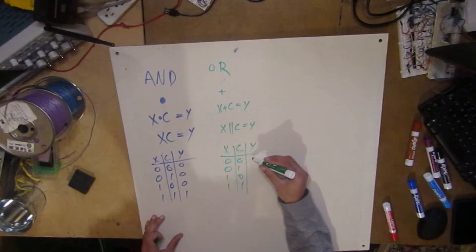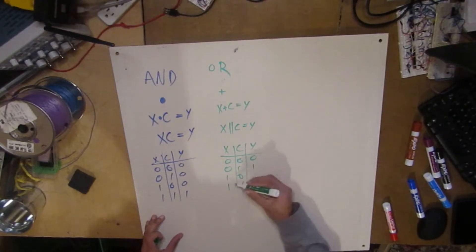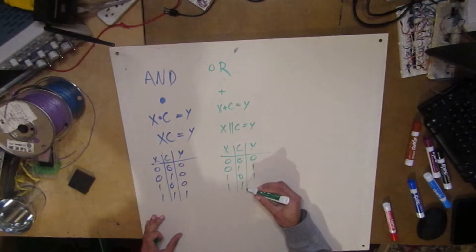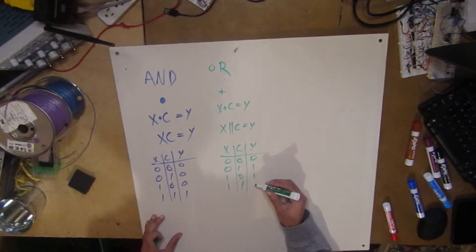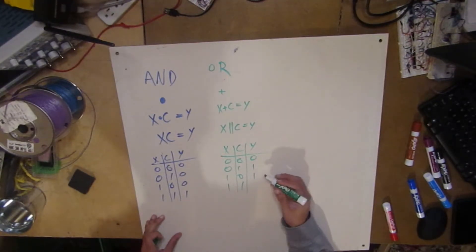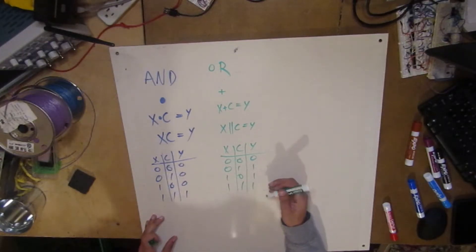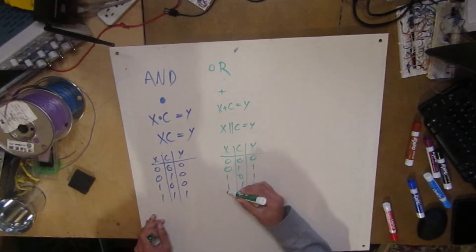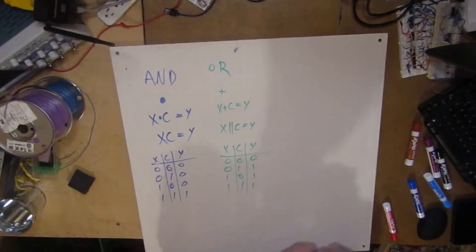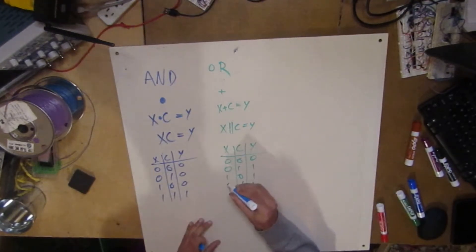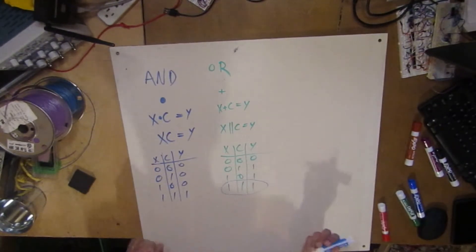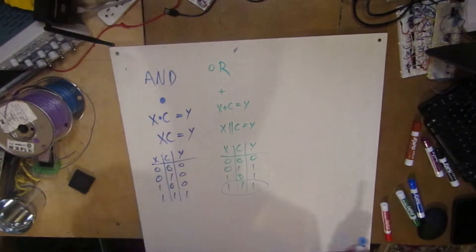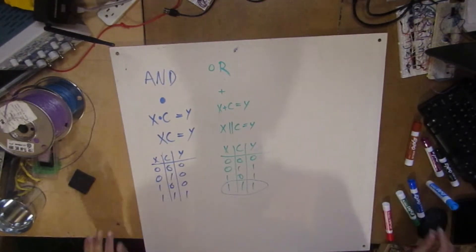What's 0 plus 0? What's 0 plus 1? What's 1 plus 0? What's 1 plus 1? That's 2. But in binary, we don't have a 2. So this is sort of like addition — there's just some sort of a little problem with the last one, right? But that's okay.